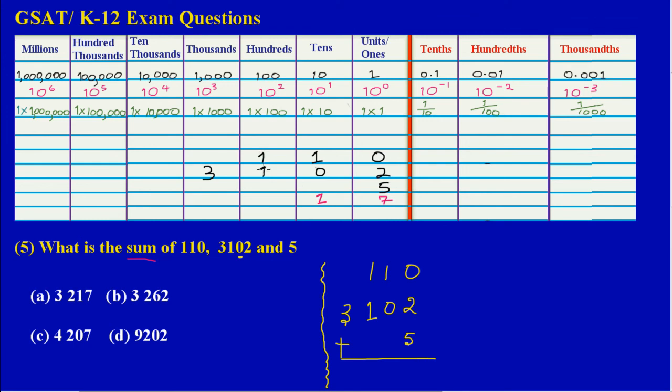In my thousands column, I only have a 3, so I would have to bring down that 3. So for my answer, I would have 3217.